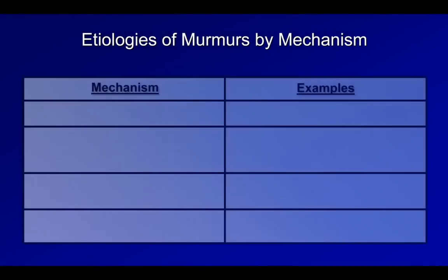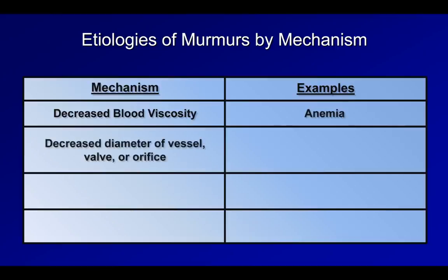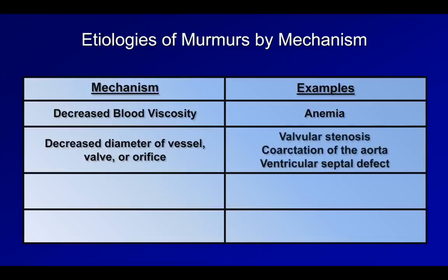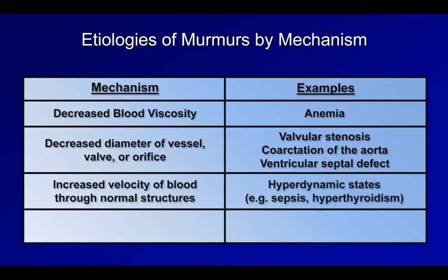Let's take a quick look at the etiologies of murmurs by physiologic mechanism. First, decreased blood viscosity — the only example of this is anemia. Next, decreased diameter of a vessel, valve, or other orifice — here we have valvular stenosis, coarctation of the aorta, and a ventricular septal defect. Then there is increased velocity of blood through normal structures, as seen in hyperdynamic states such as sepsis and hyperthyroidism.